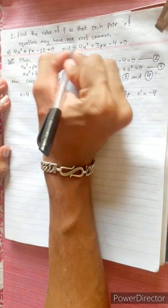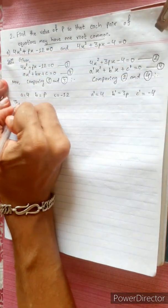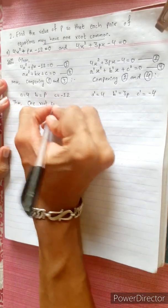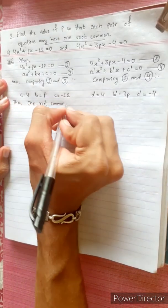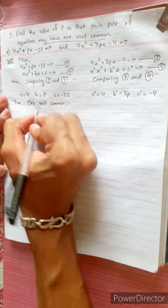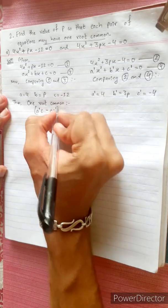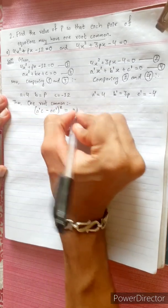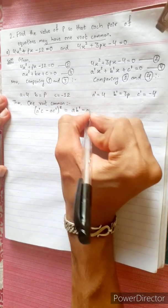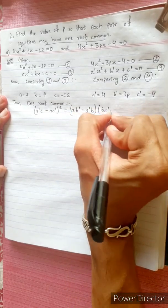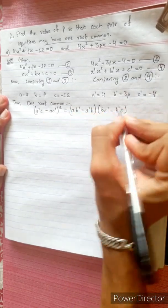The equations may have one root common. The formula for one common root is: (a'c - ac')² = (ab' - a'b)(bc' - b'c). Substituting: a = 4, c = -12, a' = 4, c' = -4.